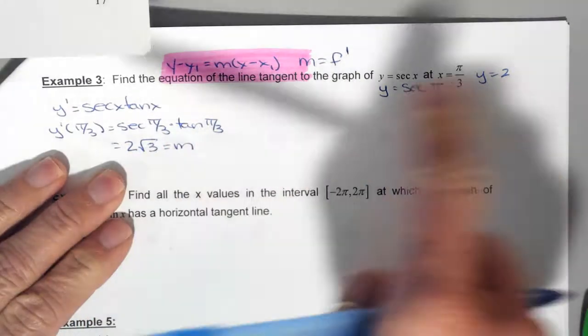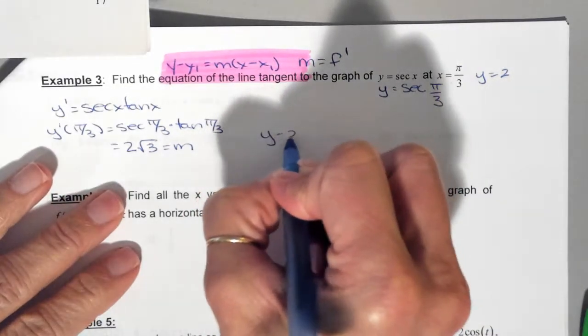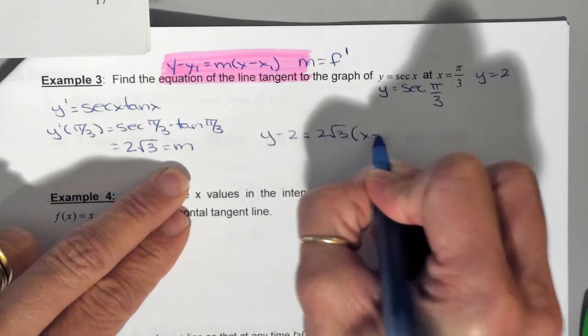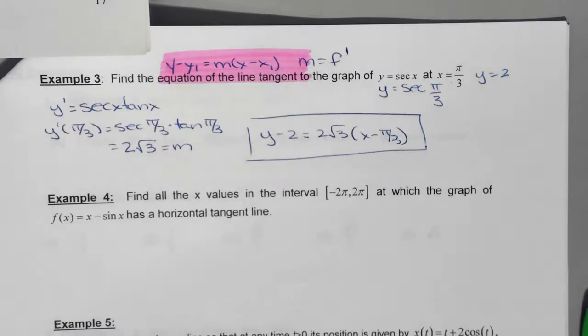So I have the slope, and I have the point. Are we ready? So this is y minus 2 is equal to 2 square root of 3 times x minus pi over 3.